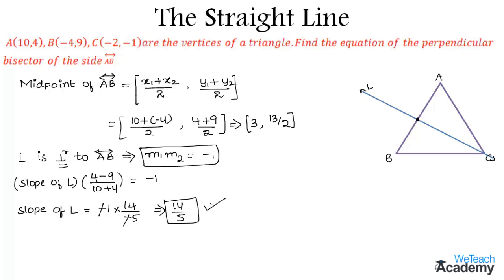By making use of the slope as well as the midpoint of line L, we can find the equation of the perpendicular bisector L using slope-point form: y - y1 = m(x - x1). By substituting all the values, we get y - 13/2 = (14/5)(x - 3).